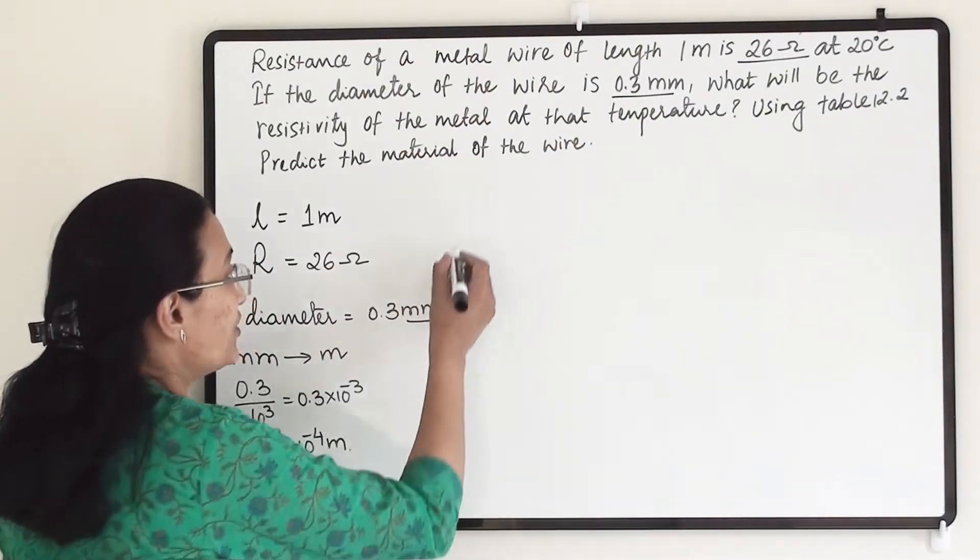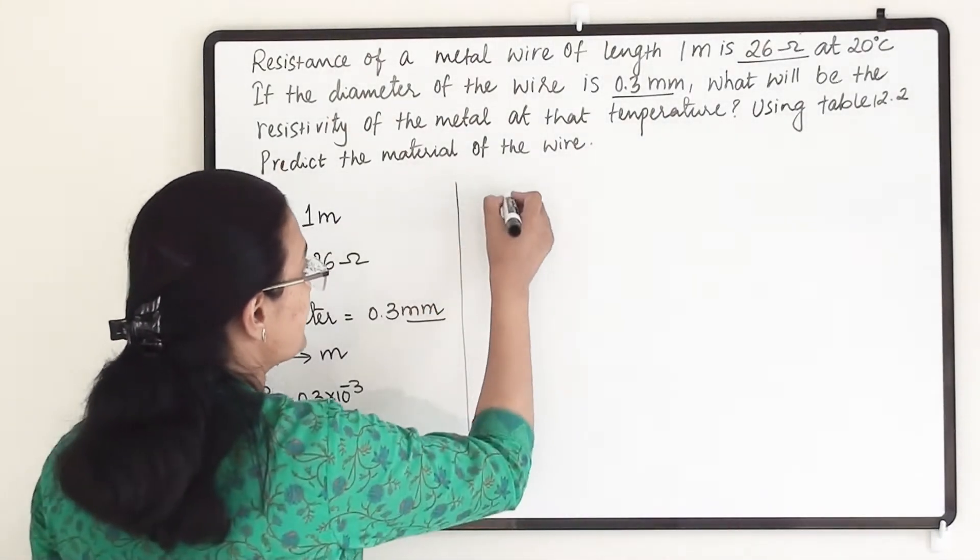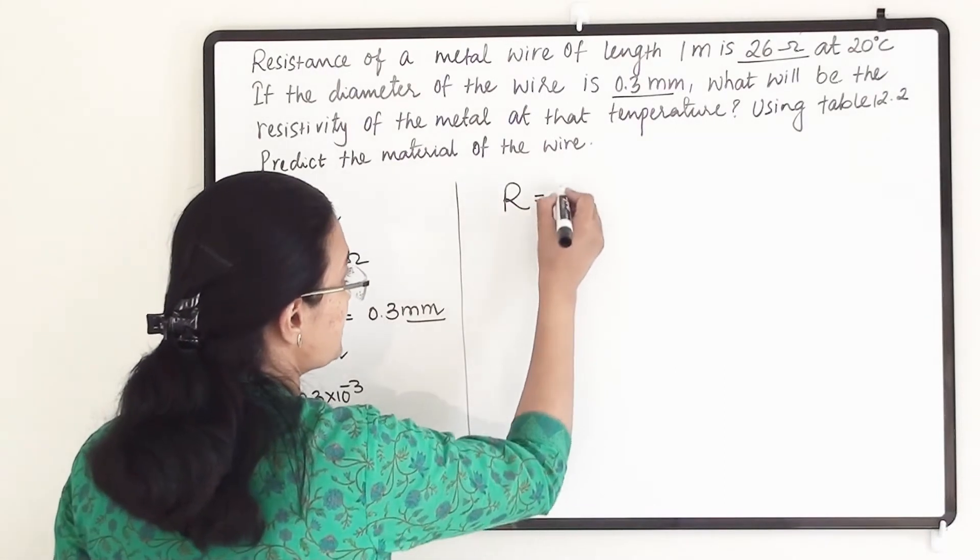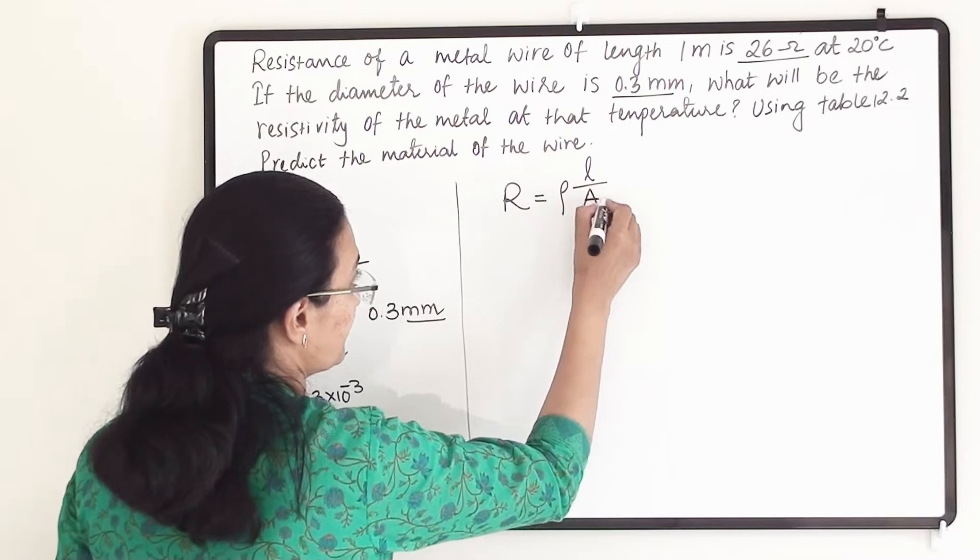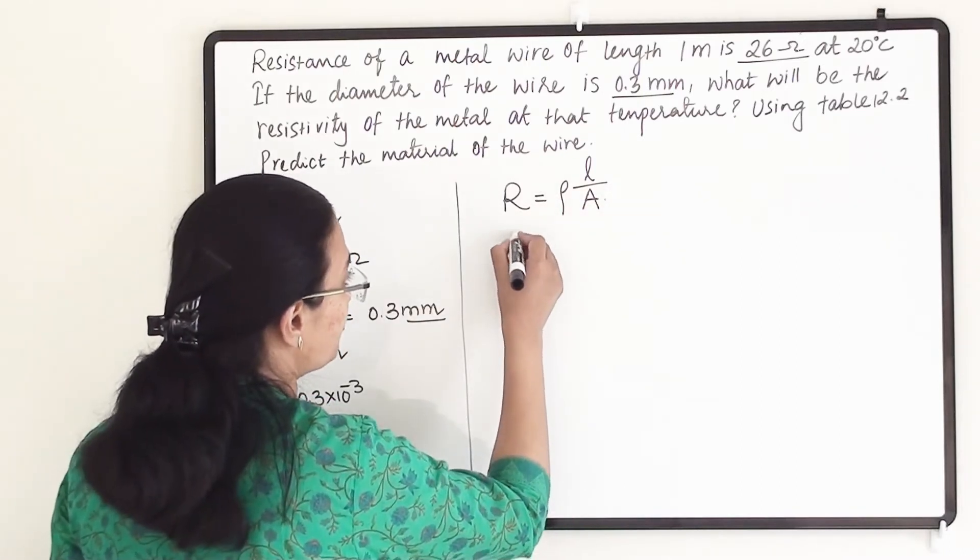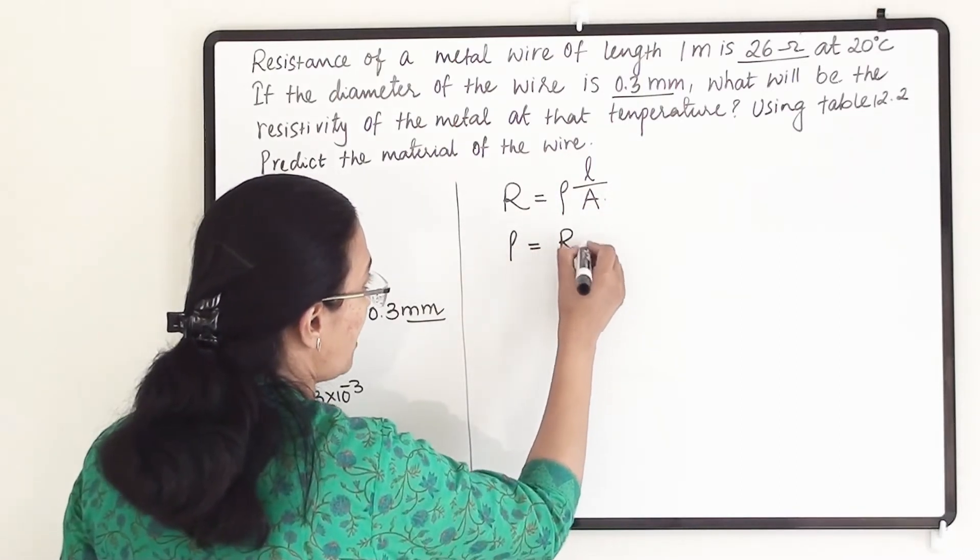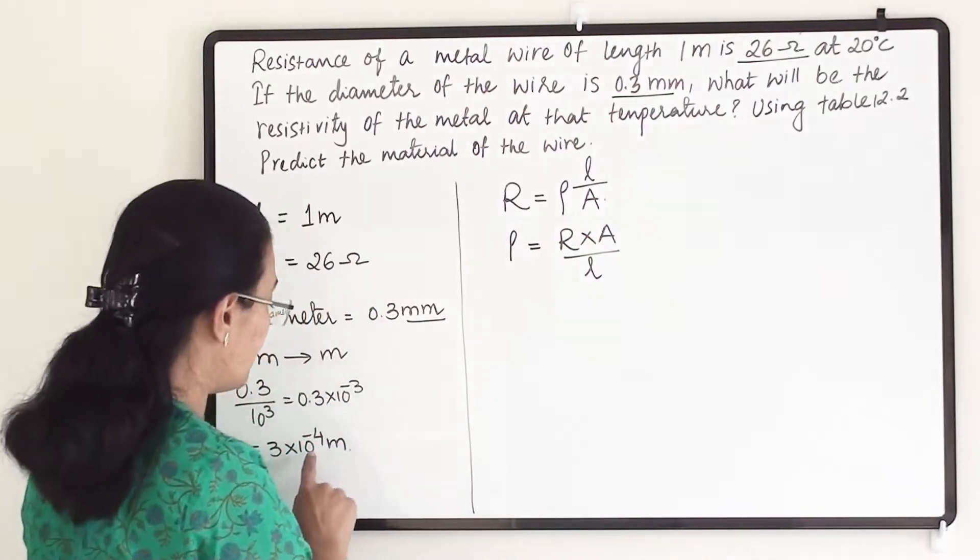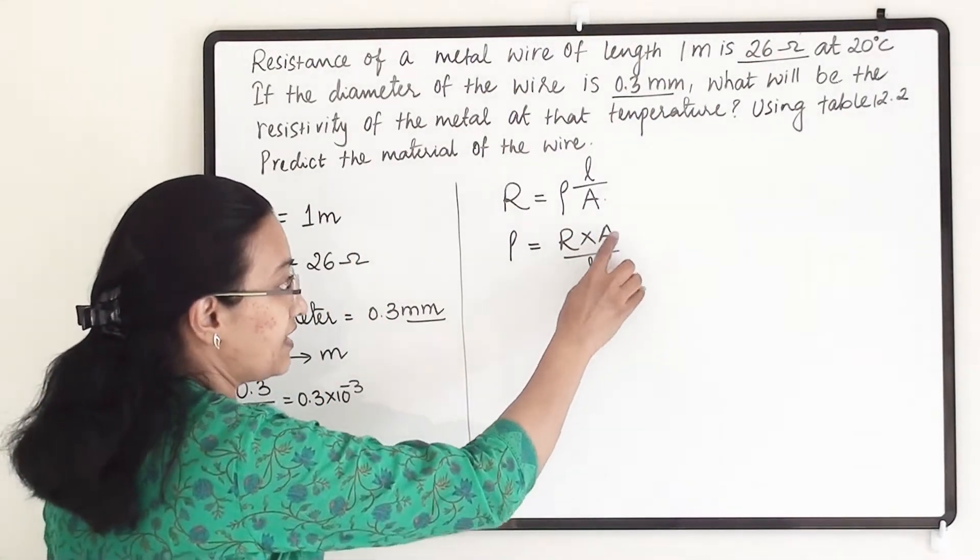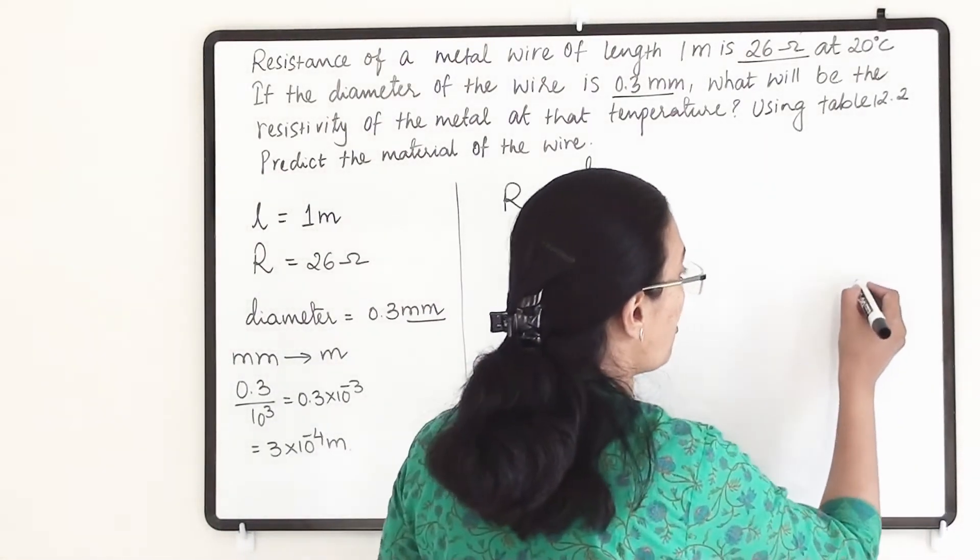Now we use the formula R equals rho L by A. To find rho, it is R into A divided by L. But here they have given us diameter and not the area. So what will be the area of the circle?